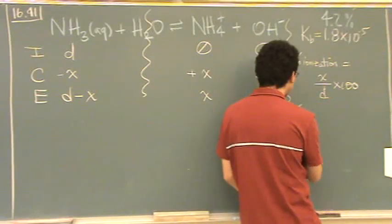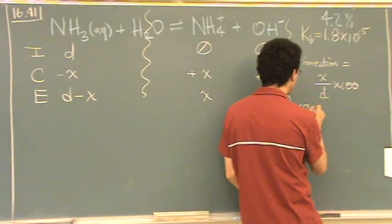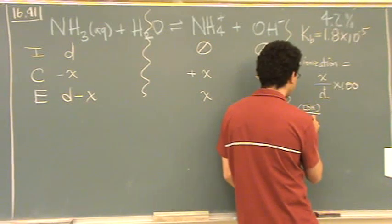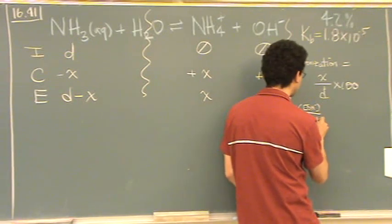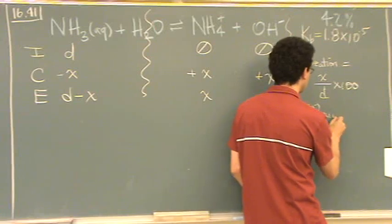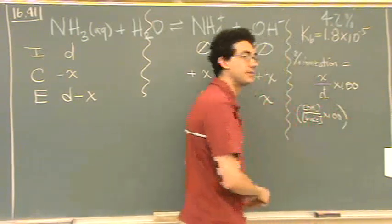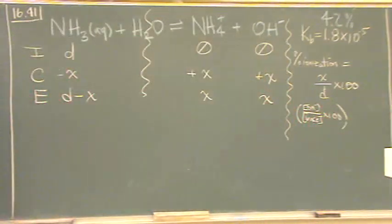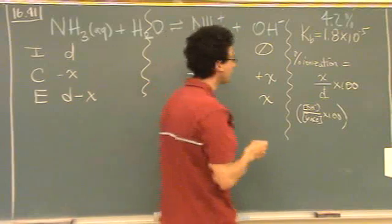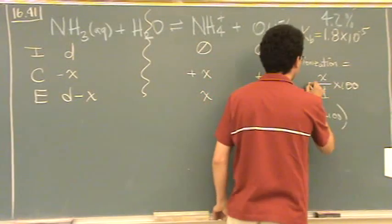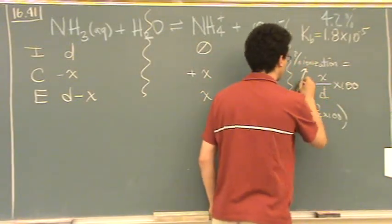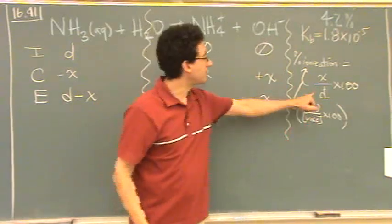If you wanted the general formula for a base, it's OH minus concentration, divided by the concentration of the base, times 100. That's the general formula. But, in our case, the concentration of OH is X, concentration of the base is D, times 100. Is that okay? So, that's your percent ionization, whatever formula you want. I'll just put it specific for us.